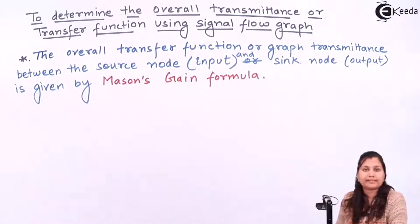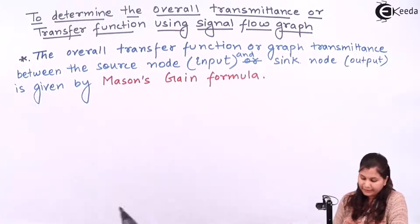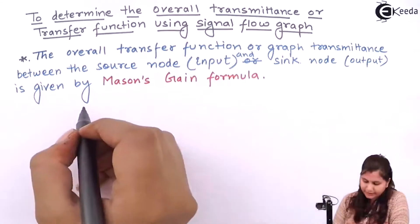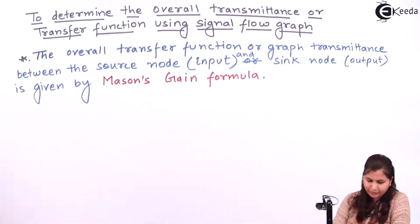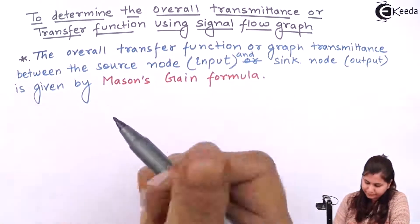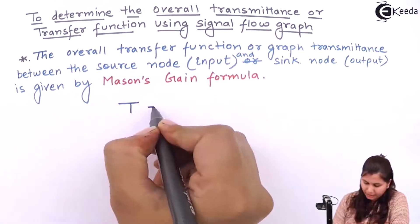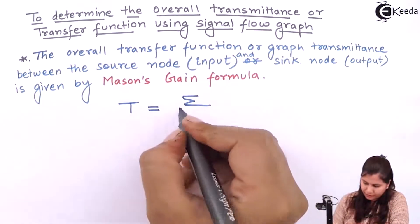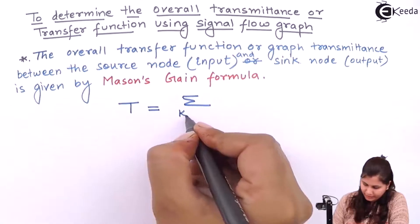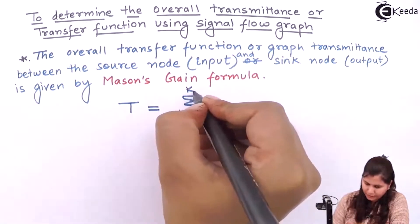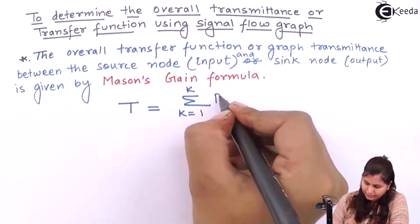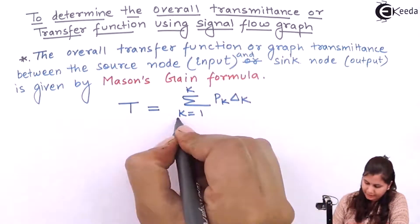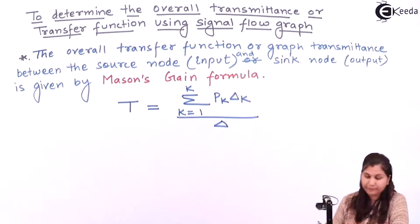What is this Mason's gain formula? The Mason's gain formula is given by T equals summation k equals 1 to K of p_k times delta_k, divided by delta.